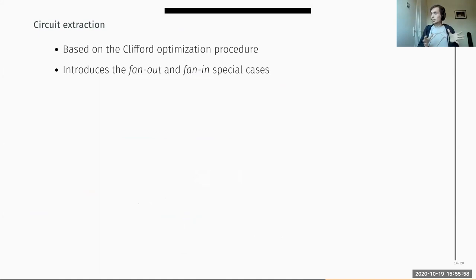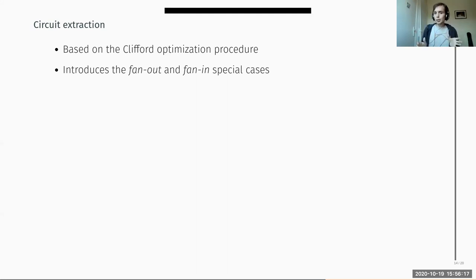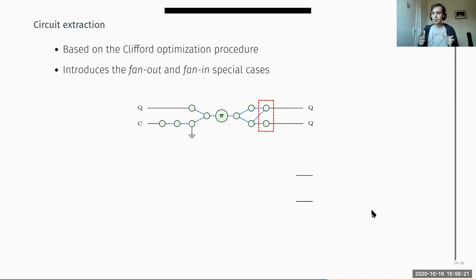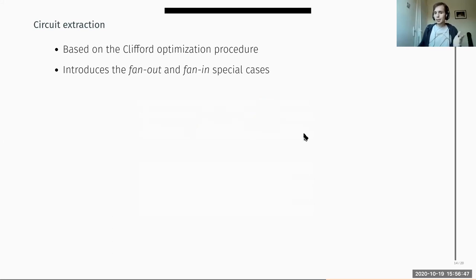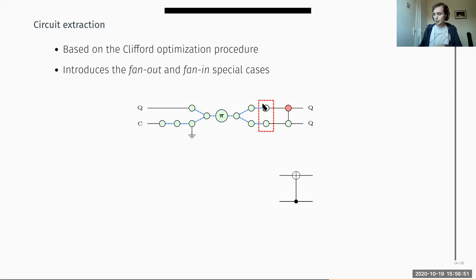Now we define the extraction procedure: having a ZX diagram with gflow, we want to get a mixed circuit back. We used the original extraction algorithm from the Clifford optimization, modifying it by adding extra extraction cases not present in the original procedure. The extraction proceeds by defining a set of border spiders from the output of the diagram, then sweeping back and extracting gate by gate, looking at the border spiders and their neighbors.